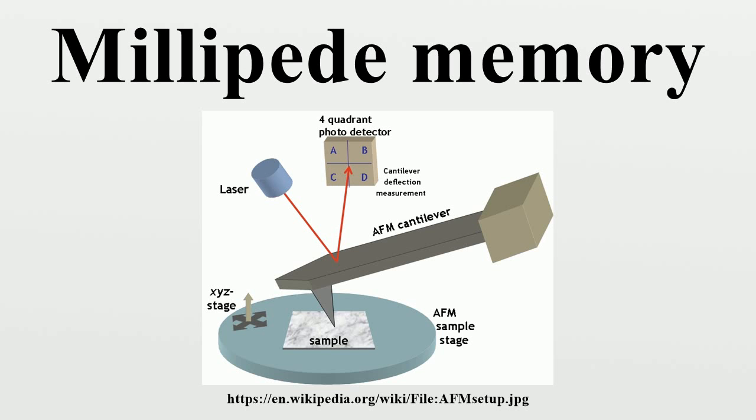Millipede storage attempts to combine features of both. Like a hard drive, millipede stores data in a substrate or medium and accesses the data by moving the medium under the head. However, millipede uses many nanoscopic heads that can read and write in parallel, thereby increasing throughput.